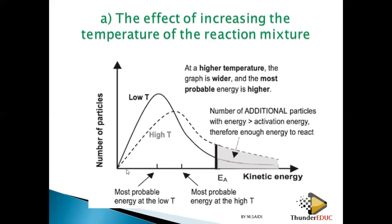If you draw a line at the activation energy threshold, at low temperature all the particles from that point onward have enough kinetic energy to react and form products. But if you compare the number of particles, the high-temperature graph has more particles exceeding that threshold. So at low temperature, only a few particles have enough kinetic energy to convert into products, while at high temperature there are more.